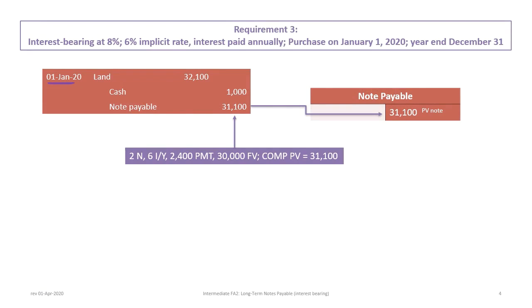On January 1st, 2020, we debit land for $32,100 — we'll see in a moment how that's determined. We credit cash for the $1,000 down payment and credit note payable for $30,100, calculated using two years at six percent. We have an interest payment of $2,400, which is $30,000 times eight percent, and a future value of $30,000. Computing the present value gives us $31,100, and adding those two together gives a total purchase value of the land at $32,100.